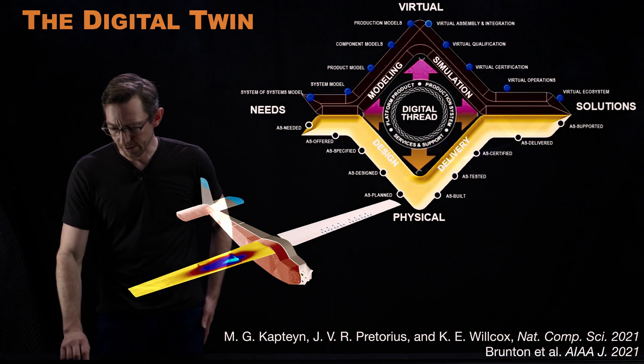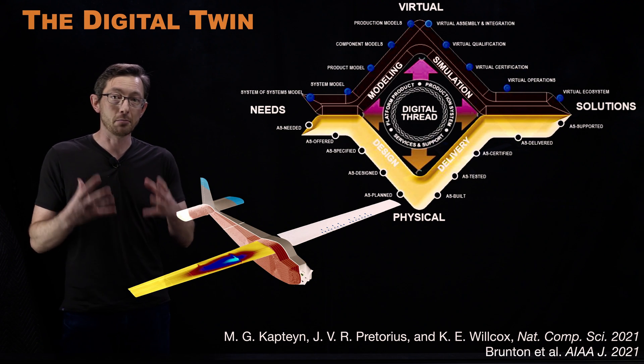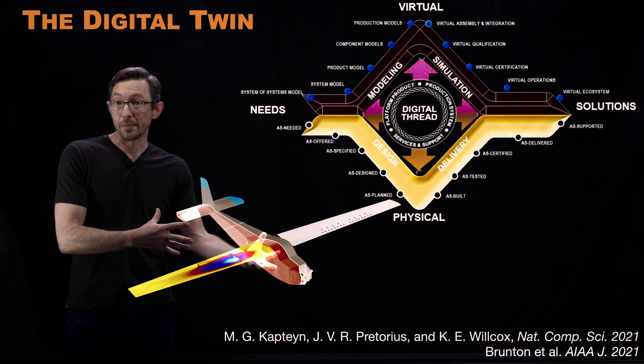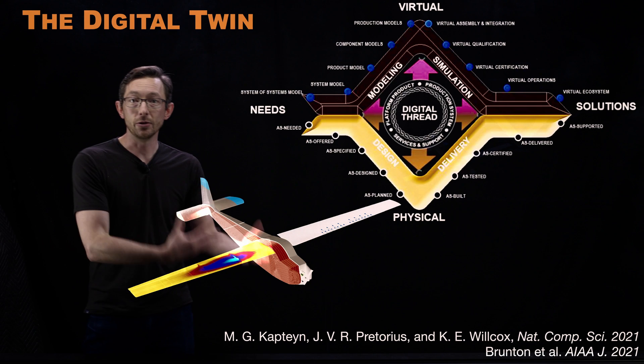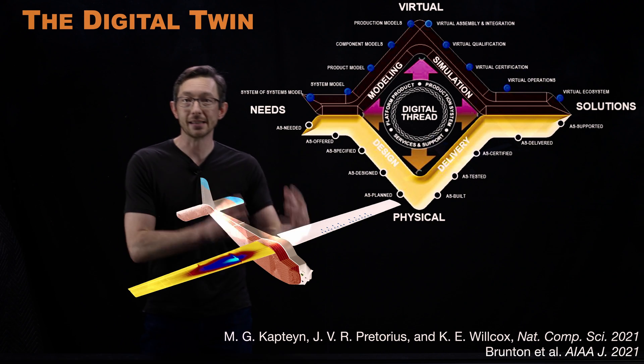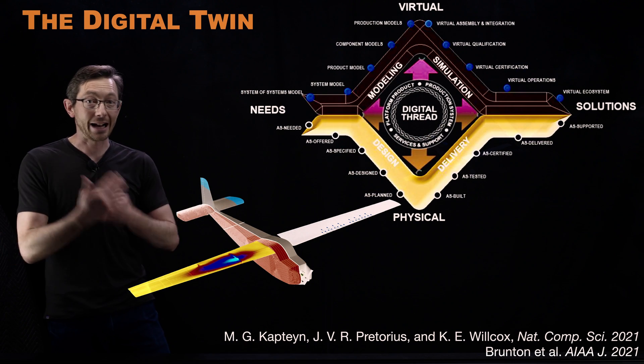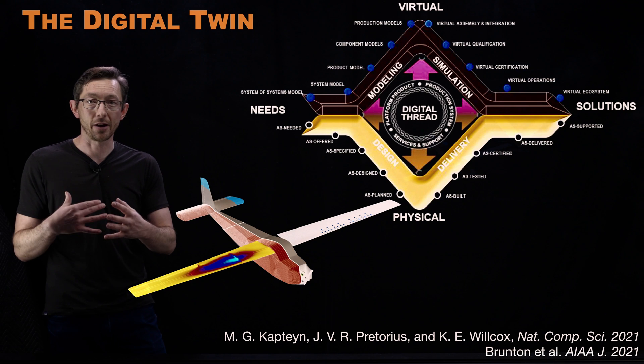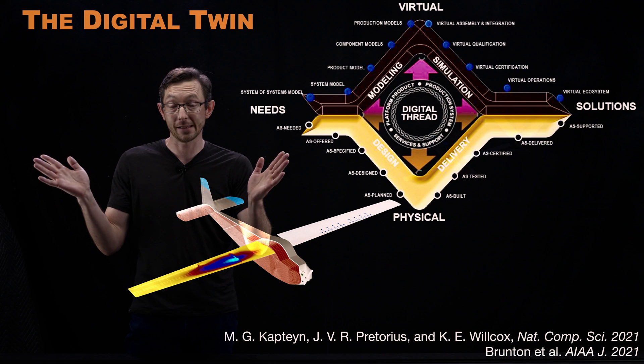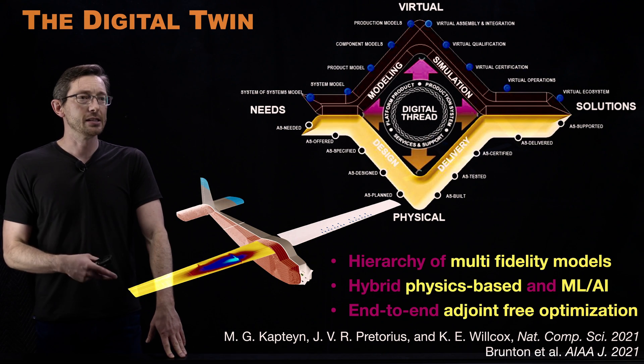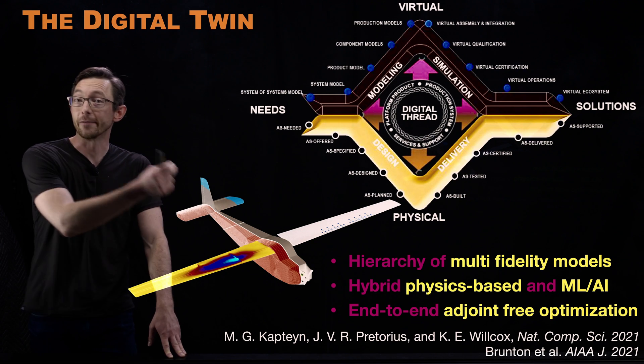Digital twins: this is where the rubber hits the road in engineering design. How do you build models of models? Some of those models might be physics-based, some are machine learning, some are hybrid. How do you update those models with new data? How do you use those models to design and optimize new engineering systems? How do you build active learning and uncertainty quantification into those models so that you can tell if your twin should be agreeing with your physical asset or if it might be disagreeing?